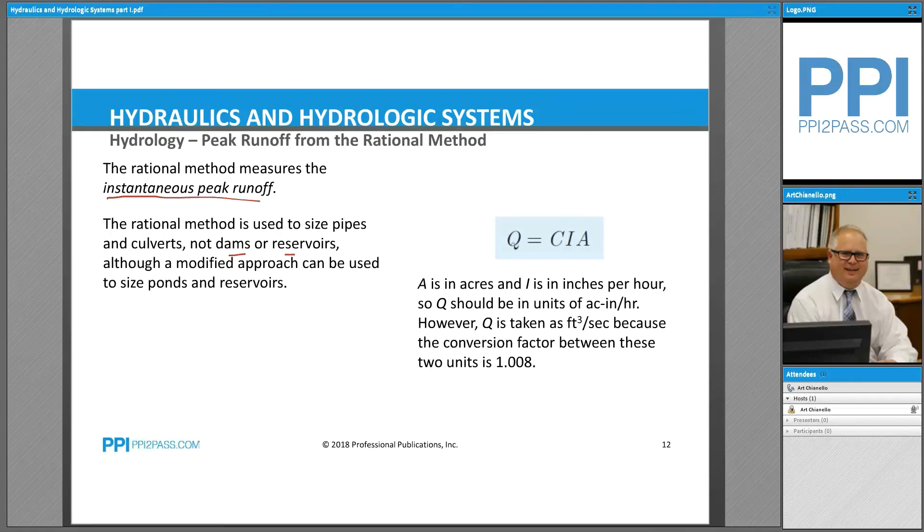Q is equal to CIA, where A is in acres (that's the area), I is the intensity of the precipitation in inches per hour, and C is a runoff coefficient, which is a function of the surface area.